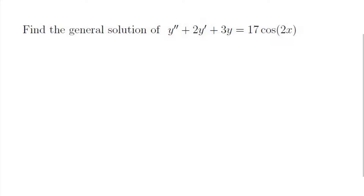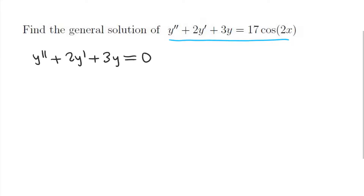The method we're going to use is: we're going to find the general solution to the associated homogeneous differential equation, which is y double prime plus 2y prime plus 3y equals zero. Then we're going to find a particular solution of the non-homogeneous equation using undetermined coefficients. We'll add those two together to get our general solution.